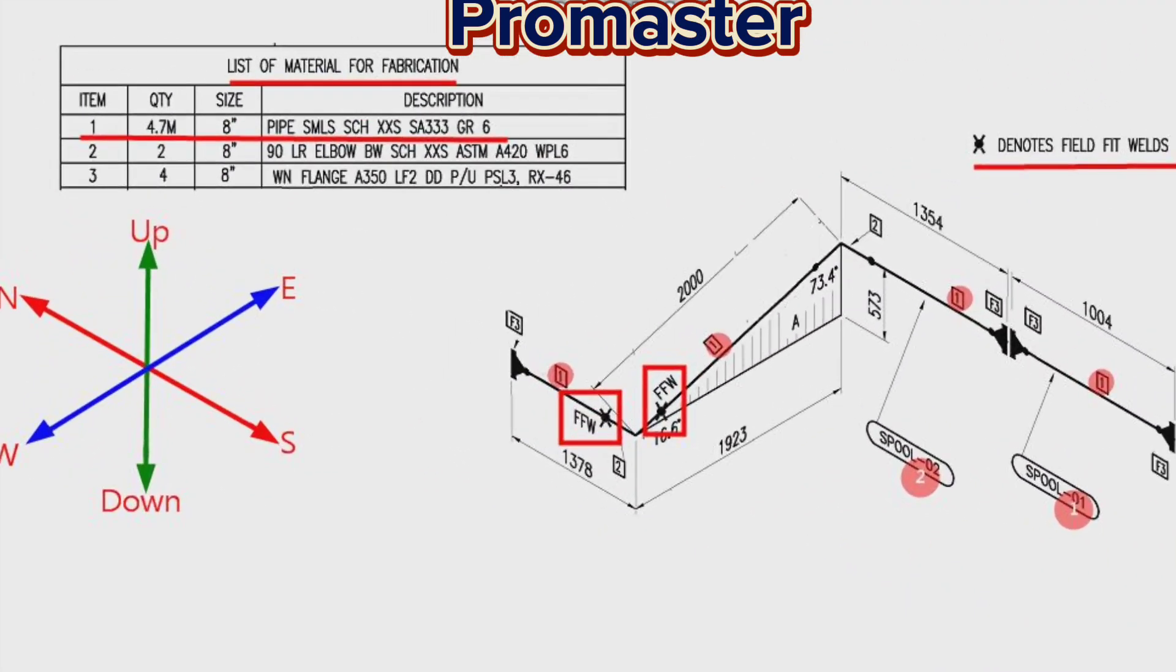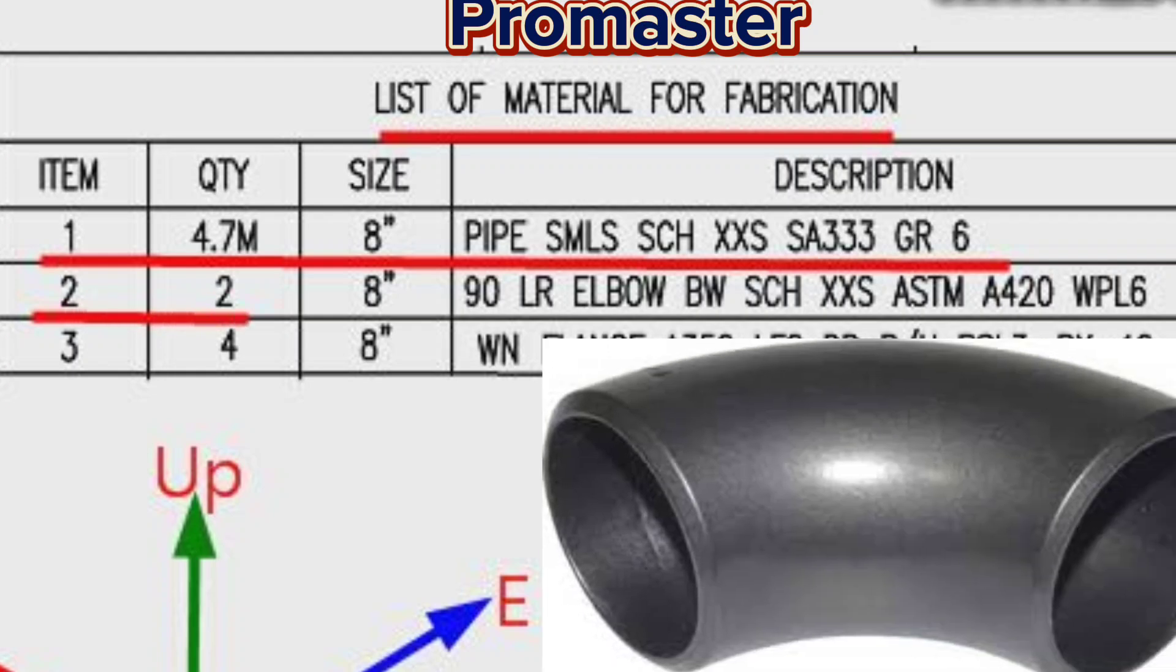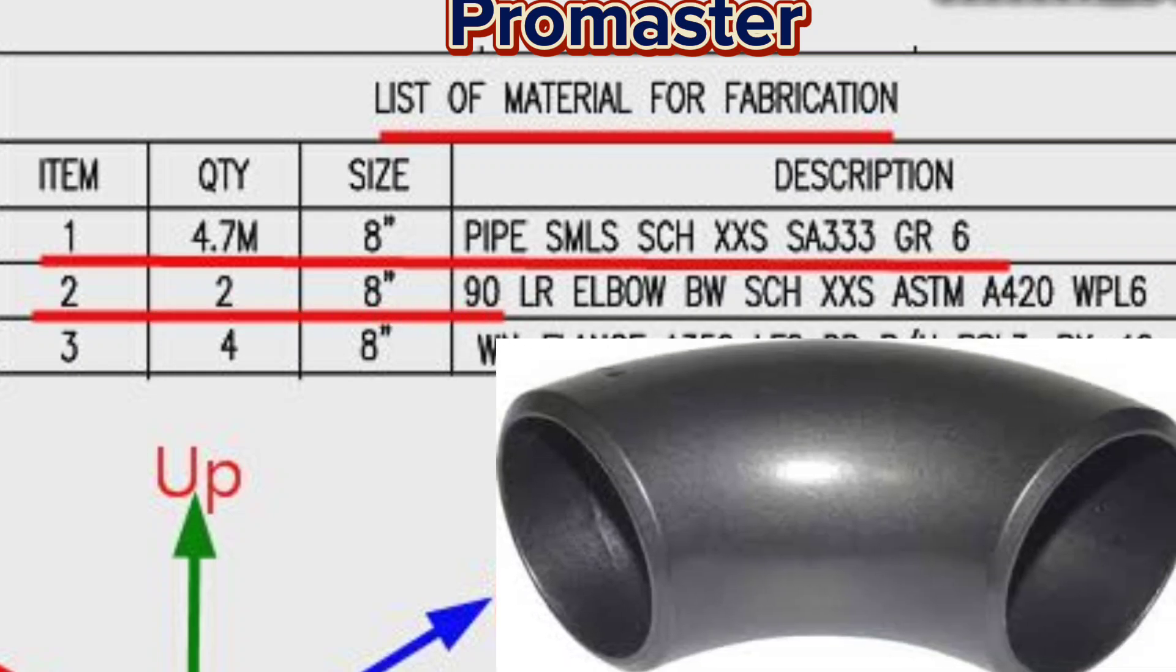Detail number 2 was used in two places in the pipe drawing. Let's look at the material list. Item number 2, the size is 8-inch elbow 90-degree, long radius, schedule XXS, ASTM A420, quantity 2 pieces.